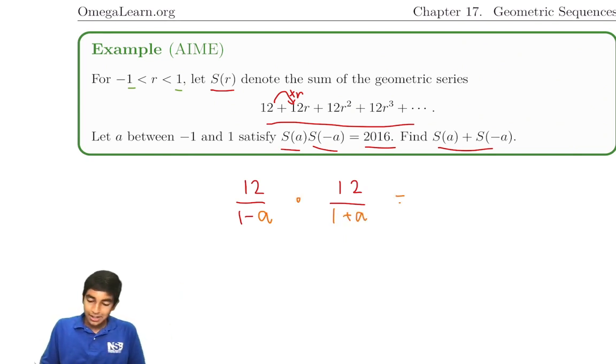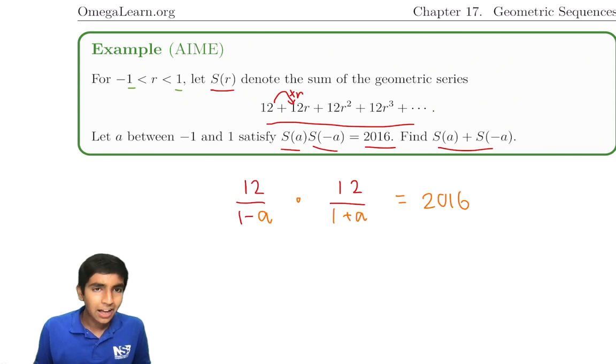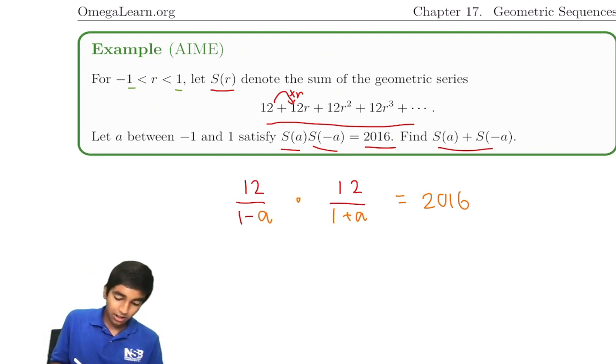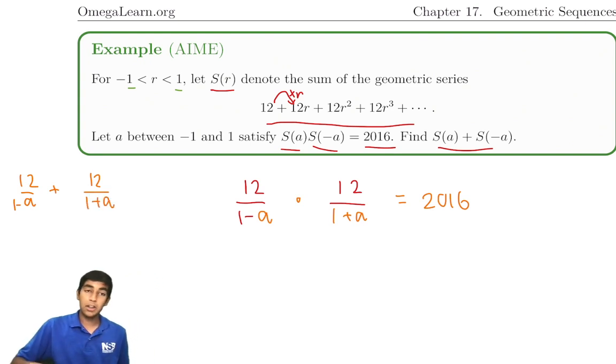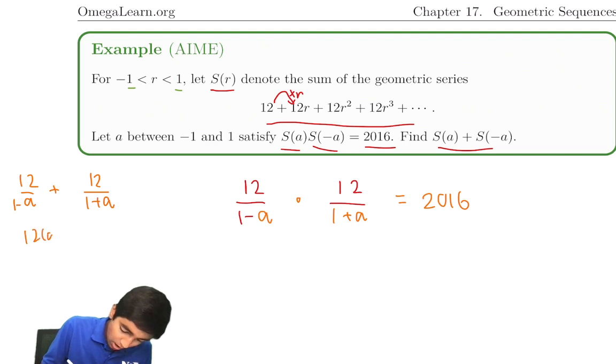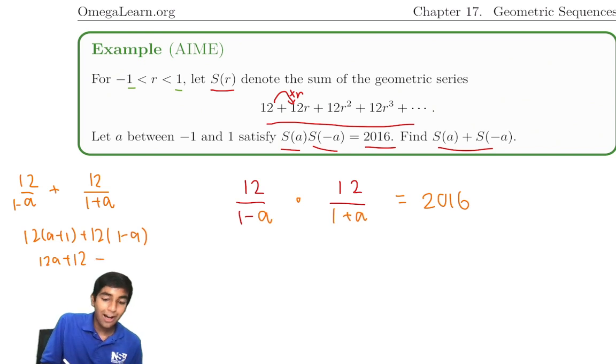The product is 2016. But this is the product. We want the sum. Do we have to solve for a? Nope. The key thing we learned in algebraic manipulation: always keep your eye on what you're actually trying to find. What is this sum? 12 over 1 minus a plus 12 over 1 plus a. Finding a common denominator: 12 times a plus 1 plus 12 times 1 minus a. This is 12a plus 12 plus 12 minus 12a. This stuff cancels. We're left with 24 over 1 minus a times 1 plus a.